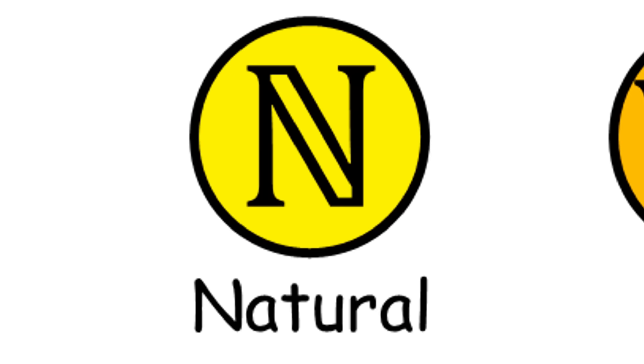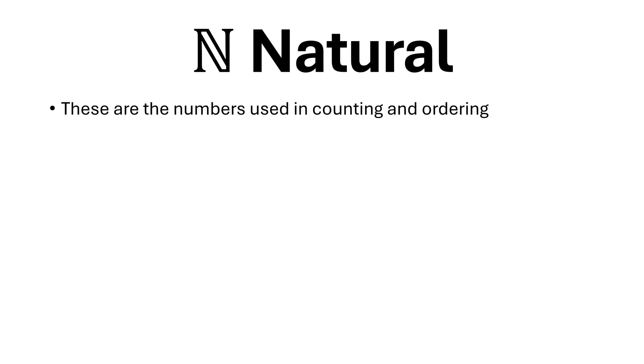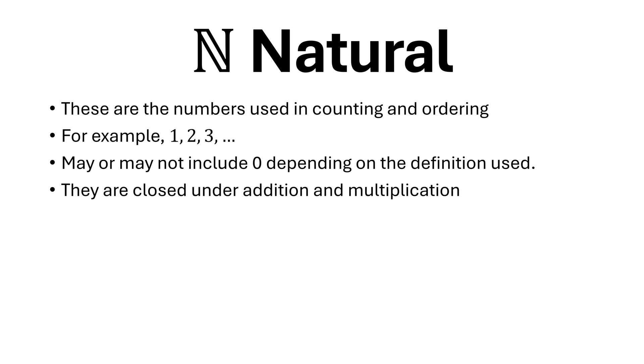Natural numbers are used in counting and ordering. For example, 1, 2, 3. They may or may not include 0 depending on the definition used. They are closed under addition and multiplication. They are the oldest of the numbers and are also known as counting numbers.